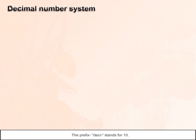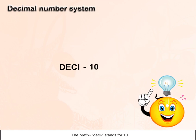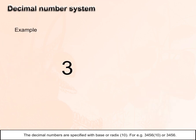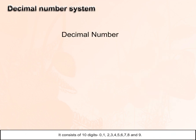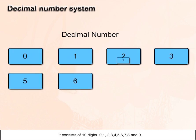Decimal number system. The prefix 'deci' stands for 10. The decimal numbers are specified with base or radix 10. For example, 3456 base 10, or simply 3456. It consists of 10 digits: 0, 1, 2...